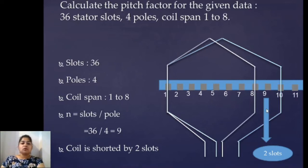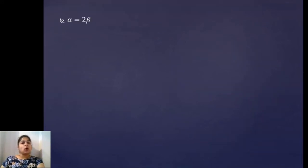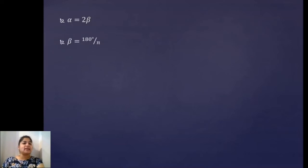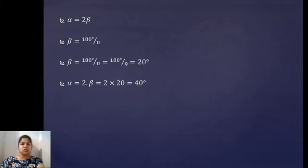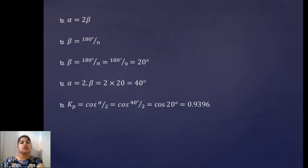Since the coil is shorted by two slots, alpha will be twice beta, where beta is 180 divided by N and N is slots per pole which we got as 9. Substituting, beta equals 20 degrees. Substituting in the alpha equation, alpha equals twice beta which is 40 degrees. Now substituting in the kp equation — kp equals cosine of alpha by 2 — we get kp equals 0.9396.